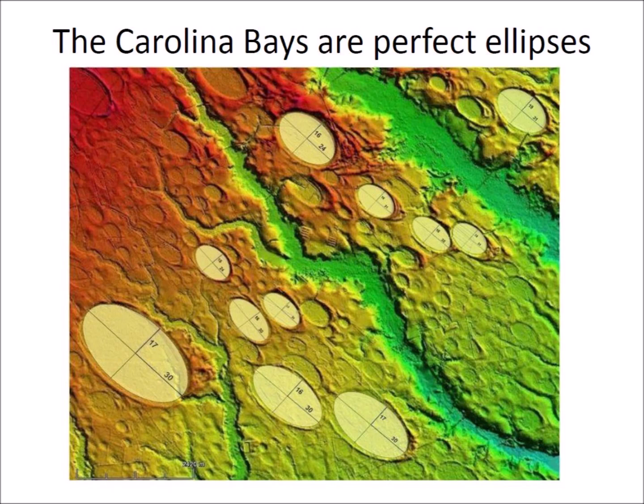We know that the ice impacts liquefied the soil and created inclined conical cavities because the resulting bays have a mathematically elliptical geometry that corresponds to conic sections. Well-preserved Carolina Bays are perfect ellipses, but many of them have been deformed by terrestrial processes.